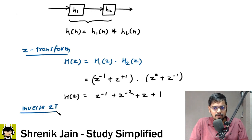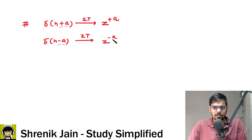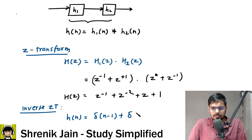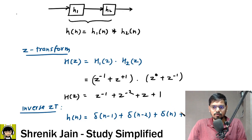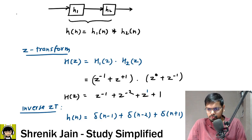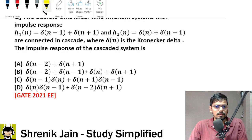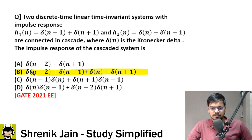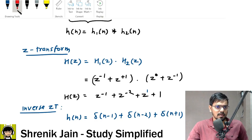Using inverse Z-transform: z^(−a) corresponds to δ(n−a). So z^(−1) → δ(n−1), z^(−2) → δ(n−2), z^(+1) → δ(n+1), and constant 1 → δ(n). The final answer is h(n) = δ(n−1) + δ(n−2) + δ(n+1) + δ(n), which is option B. This is Method 1 using the Z-transform.